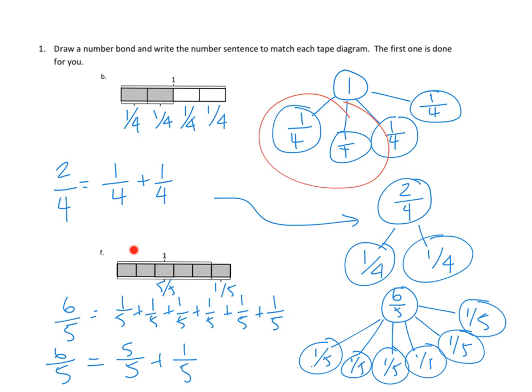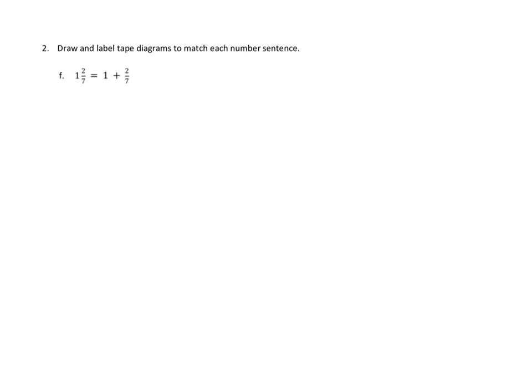So now we have a tape diagram that's well labeled, and we have a number bond that's well labeled to help us make sense of those problems. Let's take a look at one more. Number 2 says: draw and label tape diagrams to match each number sentence. And here we're told 1 and 2/7ths. So we know we can make a tape diagram of 1, and we're working in 7ths, so could we divide that up into 7 pieces? I think we can. That's 1, 2, 3, 4, 5, 6, 7, and each of those is 1/7.